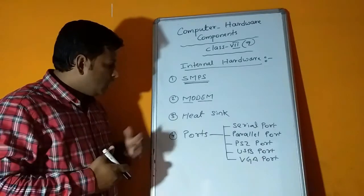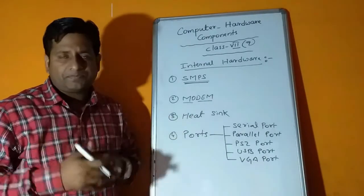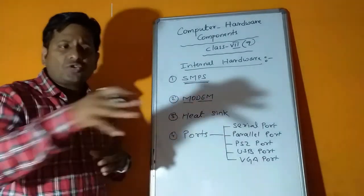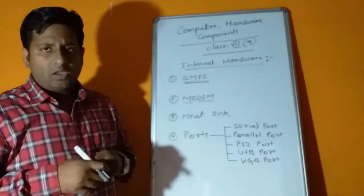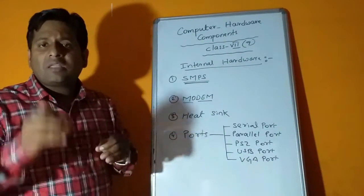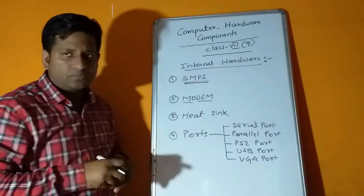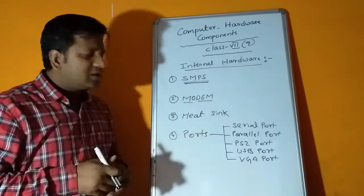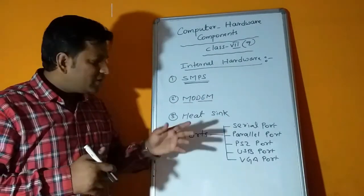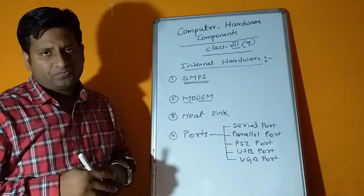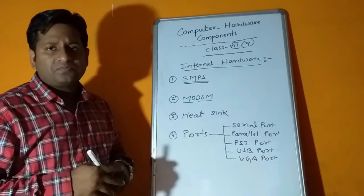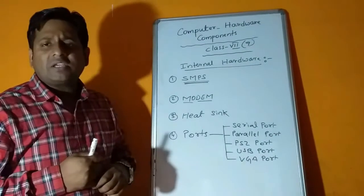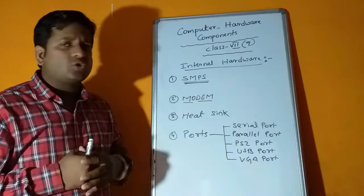The work of heat sink is it absorbs the heat from the CPU processor. It can be of two types: active heat sink and passive heat sink. After heat sink, the next part we have is ports. Ports are used for additional components. If you want to connect external hardware devices to the CPU, we need the help of ports. First type is serial port.